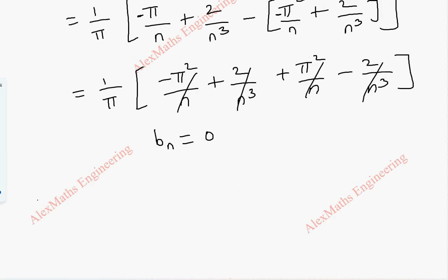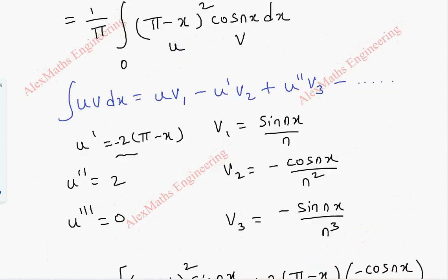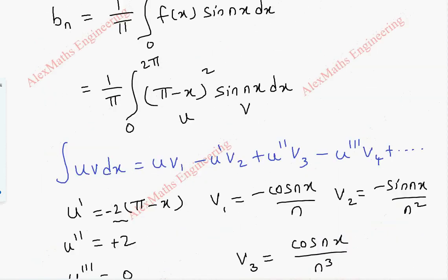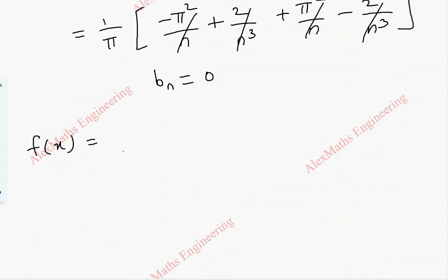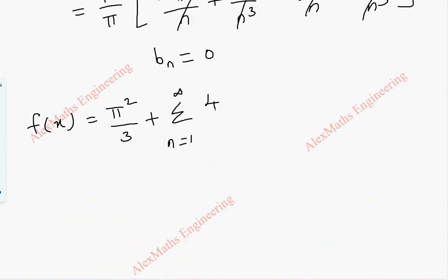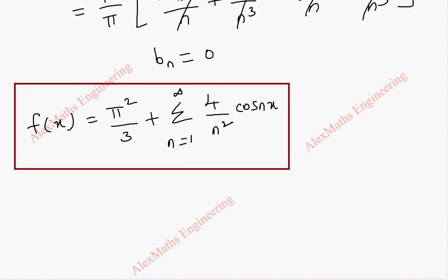Now we substitute back into the Fourier expansion formula. f(x) = a₀/2 + Σ aₙ cos(nx) + bₙ sin(nx). With a₀ = 2π²/3, a₀/2 = π²/3. And aₙ = 4/n², bₙ = 0. So f(x) = π²/3 + Σ(n=1 to ∞) (4/n²) cos(nx). This is our Fourier expansion for the given function.